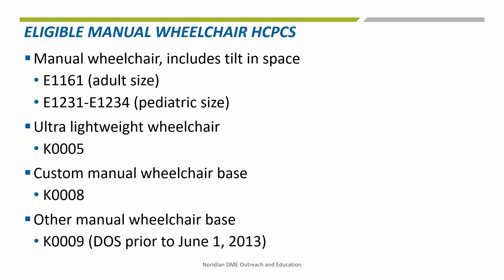The following manual wheelchairs are eligible for ADMC: E-1161, manual adult size wheelchair, includes tilt-in-space; E-1231 through E-1234, manual pediatric size wheelchair, includes tilt-in-space; K-0005, ultra-lightweight wheelchair; K-0008, custom manual wheelchair base; and K-0009, other manual wheelchair base. K-0009 may be used for codes with a date of service prior to June 1, 2013, which are listed on the PDAC Product Classification List.